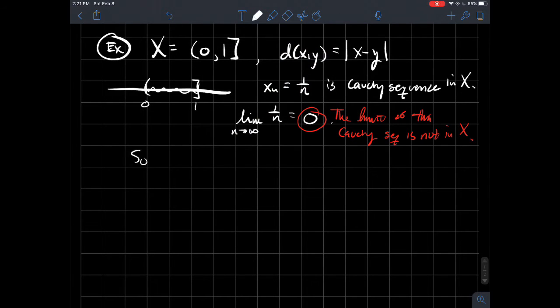We're going to say that this metric space is incomplete. And so (0, 1], d—if I think about that as my (X, d) notation for a metric space—this is incomplete.